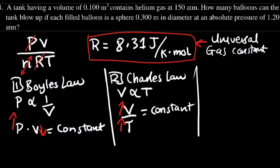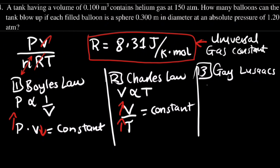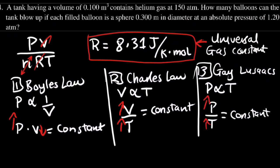Now for the third law, let us say that the pressure is not constant and the volume is constant. Then we will have the third law, which is Gay-Lussac's Law, whereby the pressure is directly proportional to the temperature. So P divided by T is equal to constant. Whenever the pressure increases, the temperature will increase also.